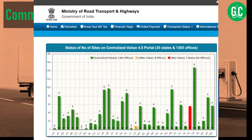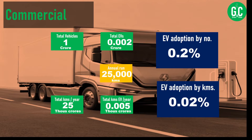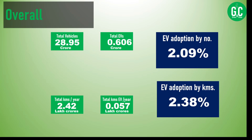All these numbers are from reliable sources like Vahan, Niti Aayog, and some AI. Looking at overall totals, India has around 28.95 crore vehicles, of which around 60 lakh are EVs. The overall EV adoption rate by number is about 2.09%, and by kilometers driven it is 2.38% — slightly better, but not by a large margin.